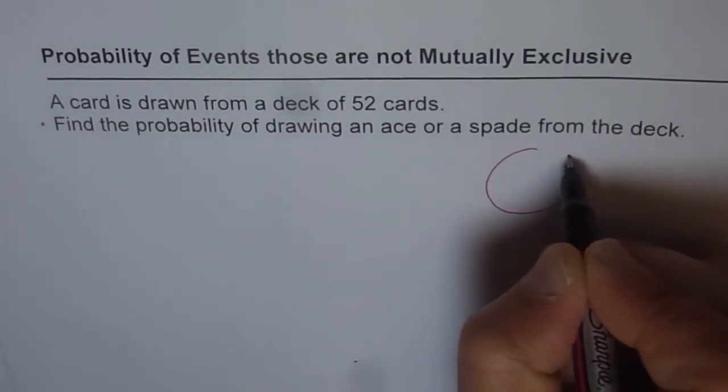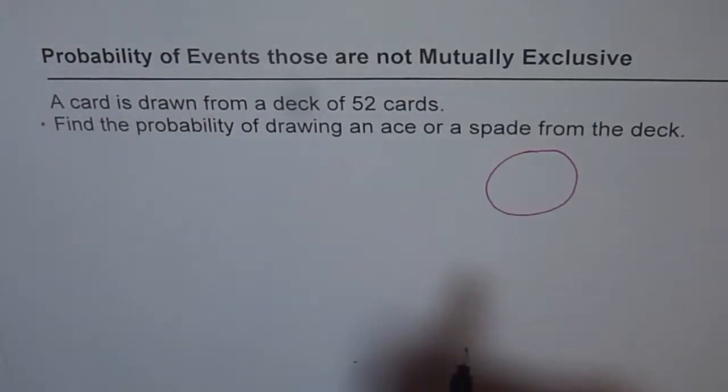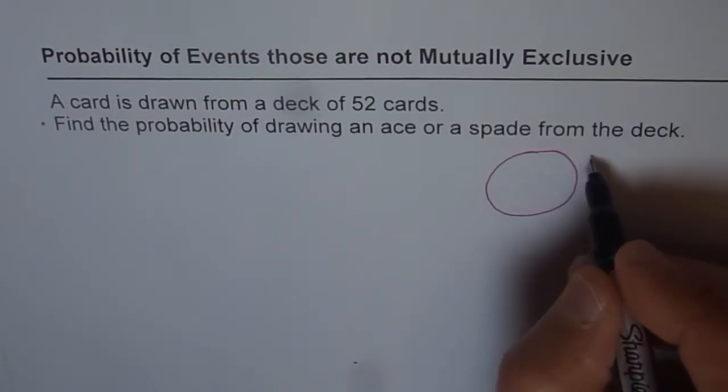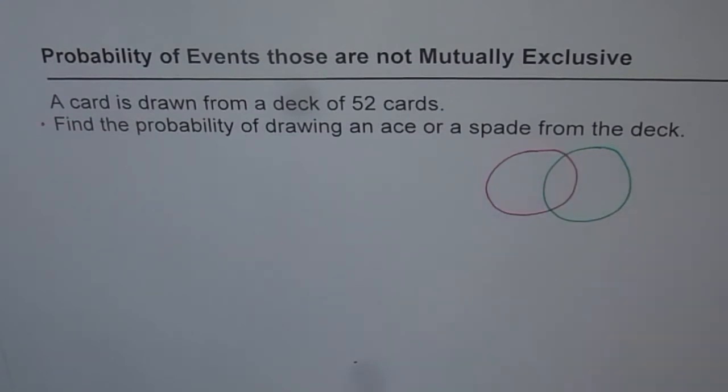In a deck of cards, we have how many aces? We have four aces. Now these four aces are of what kind? The four aces are of spades, hearts, diamonds, clubs. These are the four aces.